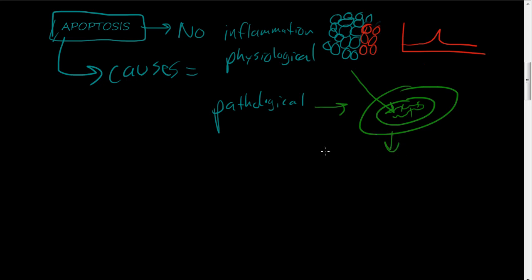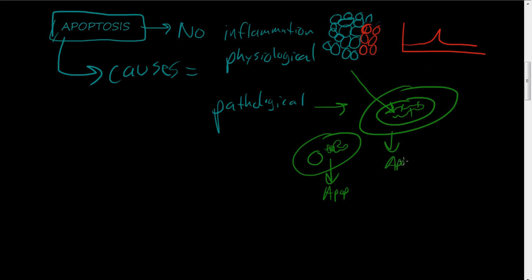Another example: you have a cell that is producing proteins that are not normal. If the cell can't fix that, or if it's making too many wrong proteins, it will undergo apoptosis. So these are some of the causes of pathological and physiological apoptosis, and remember that apoptosis does not cause inflammation.